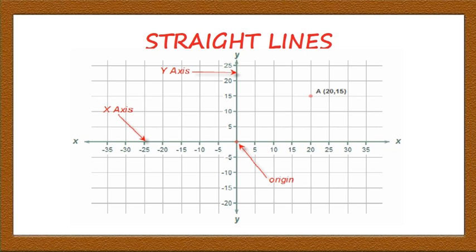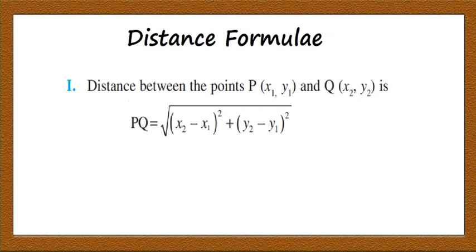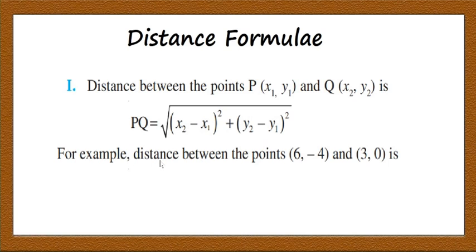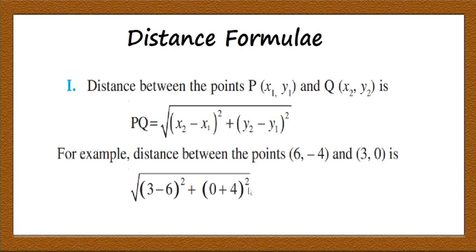Now we will look at the important results in coordinate geometry. The first is the Distance Formula: the distance between points (x₁, y₁) and (x₂, y₂) is given by PQ = √[(x₂ − x₁)² + (y₂ − y₁)²]. For example, the distance between (6, −4) and (3, 0) is √[(3−6)² + (0−(−4))²] = √[9 + 16] = √25 = 5 units.